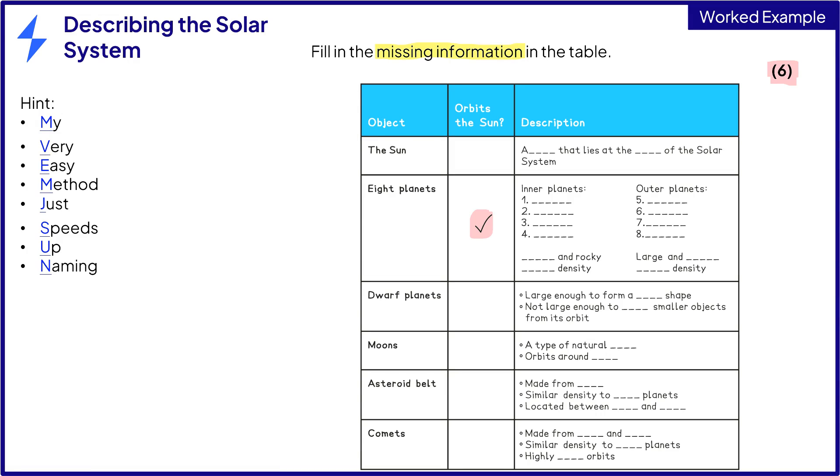Let's start with the top row. The sun is a star that lies at the centre of the solar system. The inner planets are Mercury, Venus, Earth, and Mars. And these planets are small and rocky, so they must have a high density.